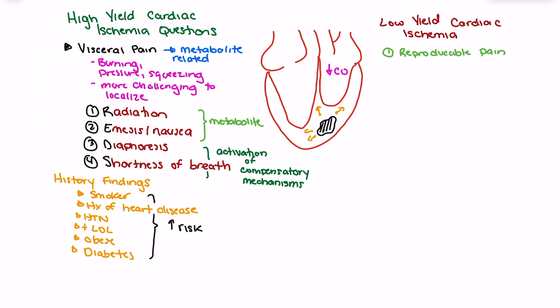Another low yield assessment is the patient's response to nitroglycerin. Giving a couple sprays of nitroglycerin and observing whether the patient does or does not respond is not typically a high yield indicator of whether the patient is or is not having cardiac ischemia. While we would like to see patients respond to nitroglycerin, just because someone is not getting better with nitroglycerin does not mean they don't have cardiac ischemia. Response to nitroglycerin does not directly correlate to whether the patient is having an ischemic event.